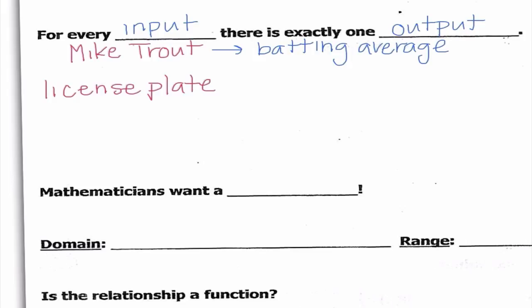The next thing I want to talk about is your license plate. A lot of you probably have a car, and whether it's yours or your parents' car, it has a license plate. If you got caught speeding by the cops, they would type in your license plate number and your address would come up. So your license plate is the input and your address is the output. It's okay that you have more than one car at your house, but the license plate is only going to be mapped to one specific address, even though multiple cars may go to the same address. Each input has exactly one output.